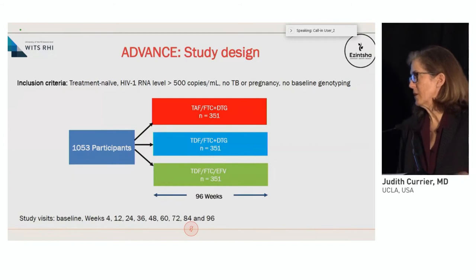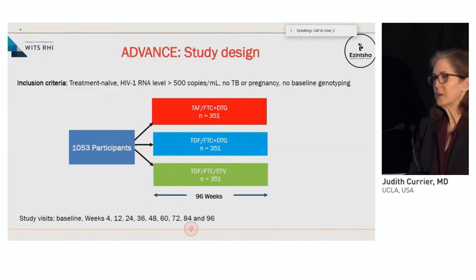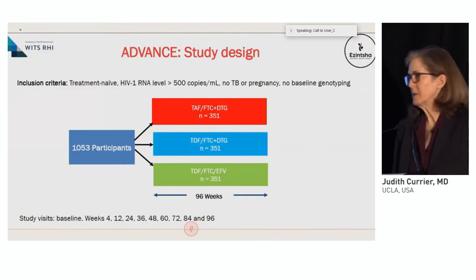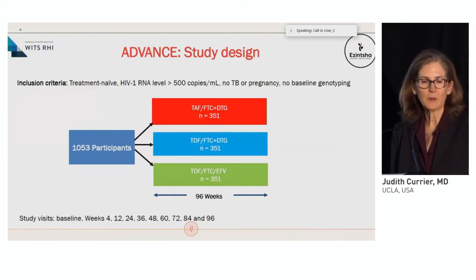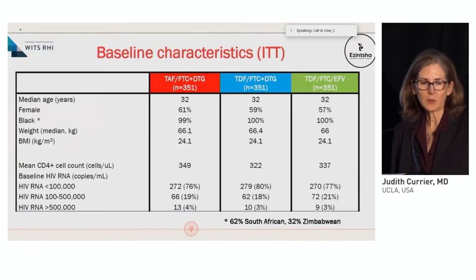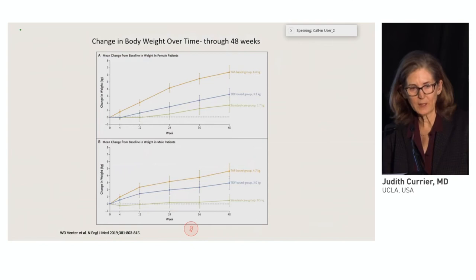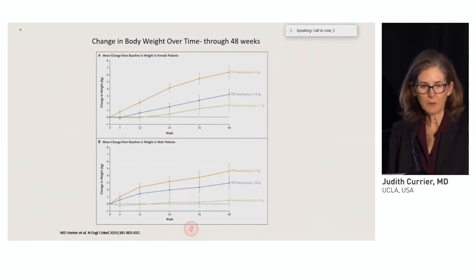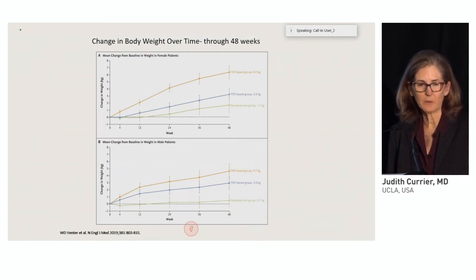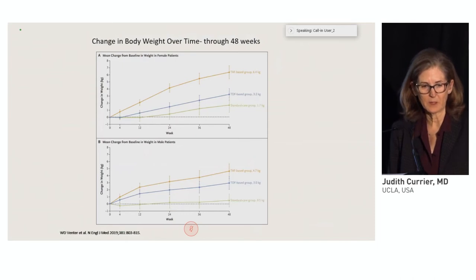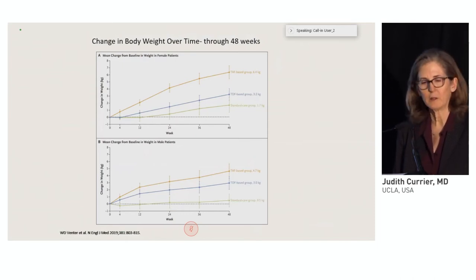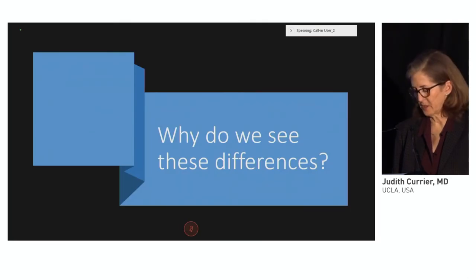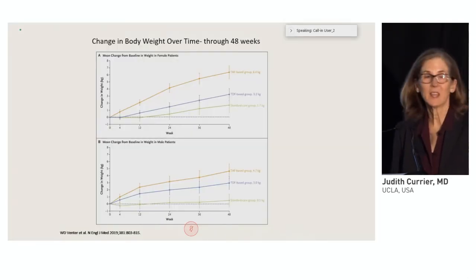The data from the ADVANCE study were important in helping us understand, at least in the population of women in South Africa, the higher rates of weight gain for women. This trial had about 60% women, and body weight change over 48 weeks was higher for women — 6.4 kilograms compared to 4.7 for men on the TAF dolutegravir arm in the New England Journal report. Out to 96 weeks, it was actually 10 kilograms.